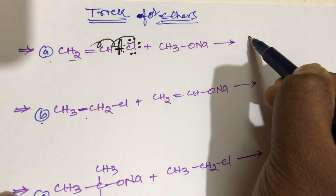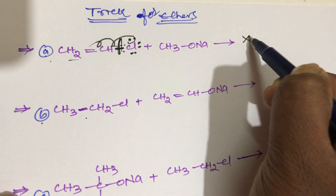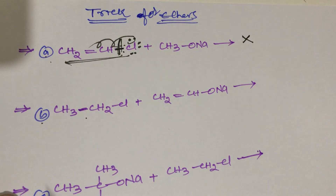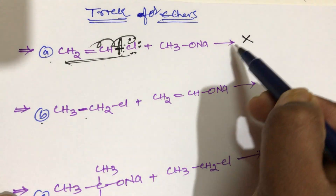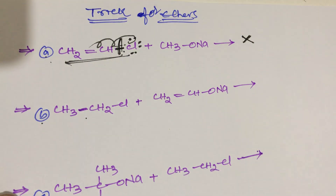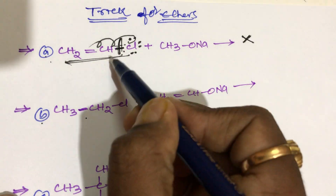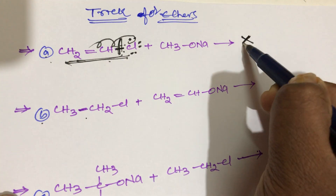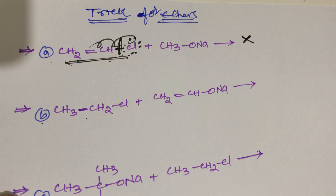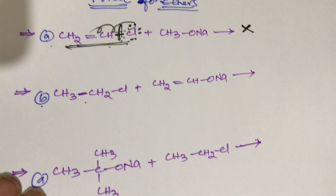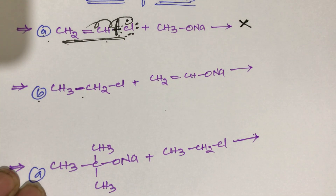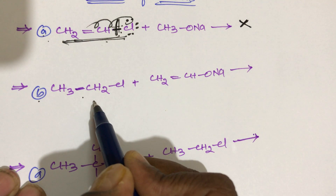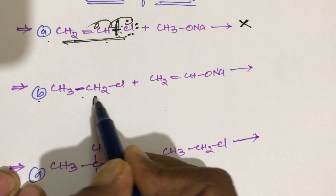That is why ethers cannot be prepared from vinyl chloride. In compound A, ethers cannot be prepared — this compound does not give ethers. What about the second compound? This is ethyl chloride, and it is a primary alkyl halide.